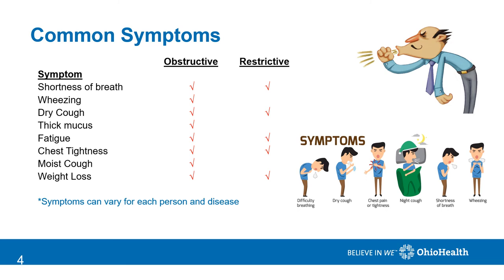Patients may experience some of the same symptoms with both categories of diseases, although each person may experience different symptoms and symptom severity. You and your physician can create a plan tailored for you that includes medications, smoking cessation, supplemental oxygen if needed, and an overall healthy lifestyle that will help control your symptoms and improve your quality of life.